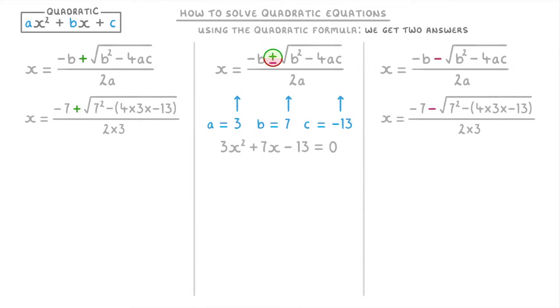Now sometimes you might be asked instead to find the exact value of the solution. Which means that you can't round it to a certain number of decimal places or significant figures. Instead you have to just simplify it down as much as you can.